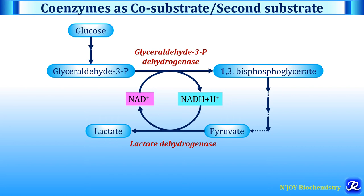NAD formation is more important than lactate formation. Lactate has no metabolic role; in fact, it can cause muscle cramps and lactic acidosis and is harmful. But it is still formed because NAD formation is essential to continue glycolysis under anaerobic conditions. Glycolysis is the only energy-producing pathway that can operate under anaerobic conditions, and it is also essential in cells like erythrocytes where there is no mitochondria.